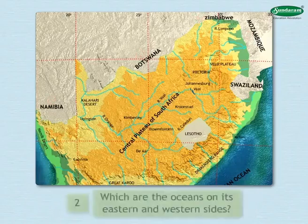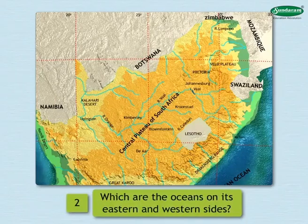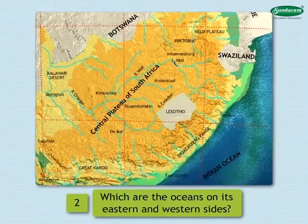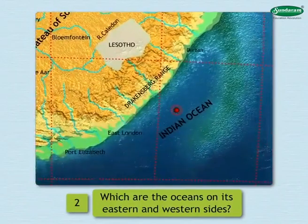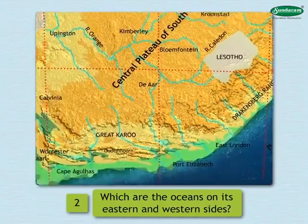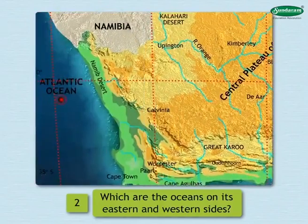2. Which are the oceans on its eastern and western sides? To its east lies the Indian Ocean and to its west lies the Atlantic Ocean.